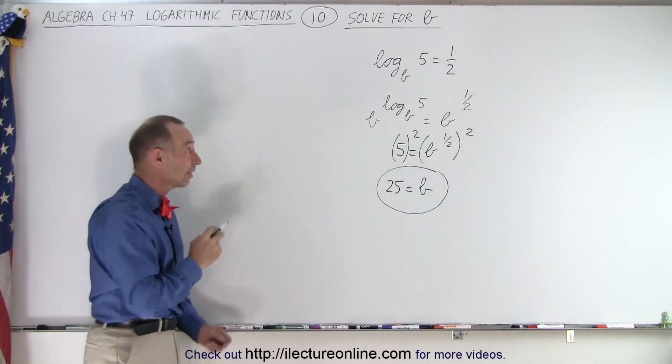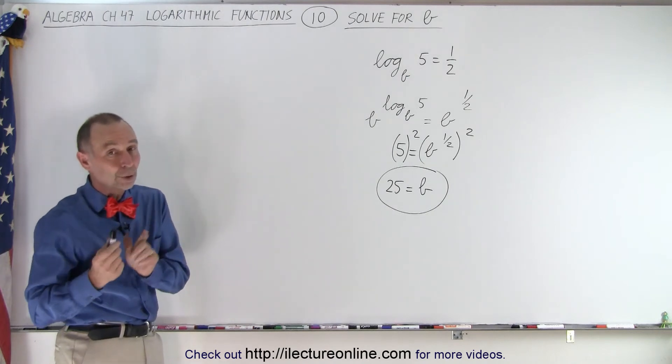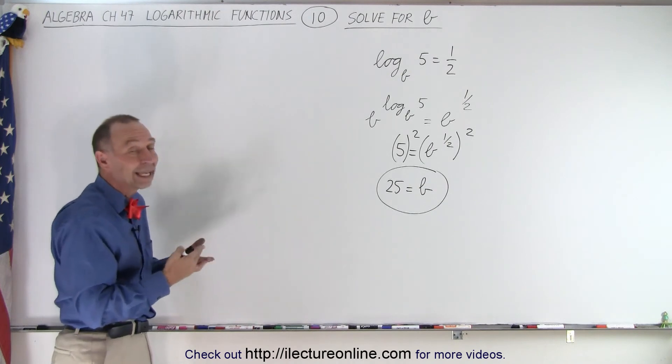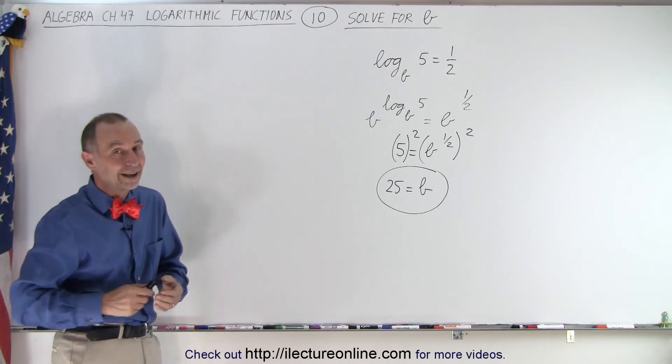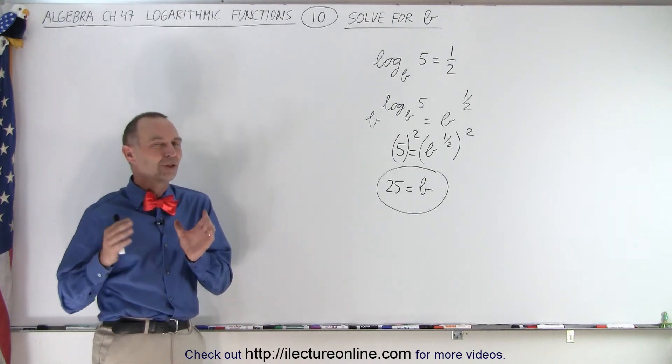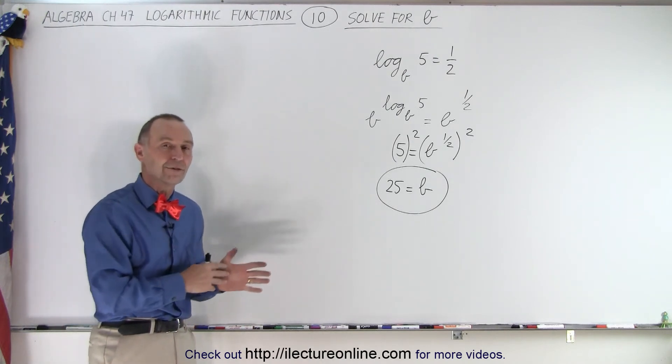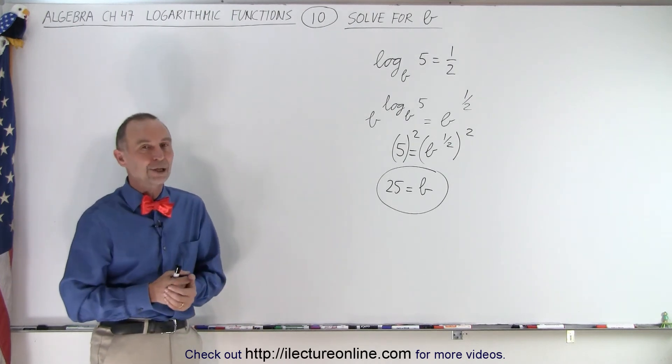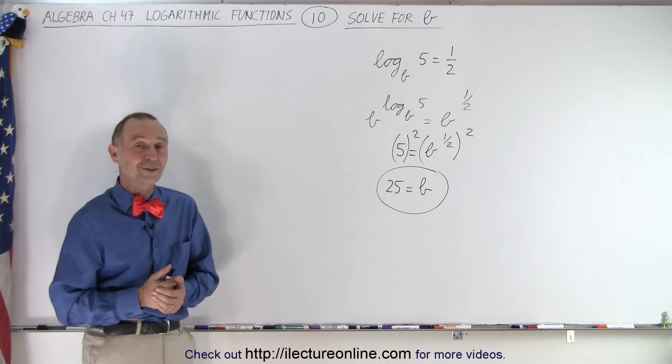So, in both cases, on the previous example and in this example, we found what we're looking for by taking the antilog of both sides. And hopefully you're beginning to see that that's a very powerful technique that's used a lot when we're dealing with logarithmic functions. You take the antilog of both sides to solve for something in the equation. That is how it's done.